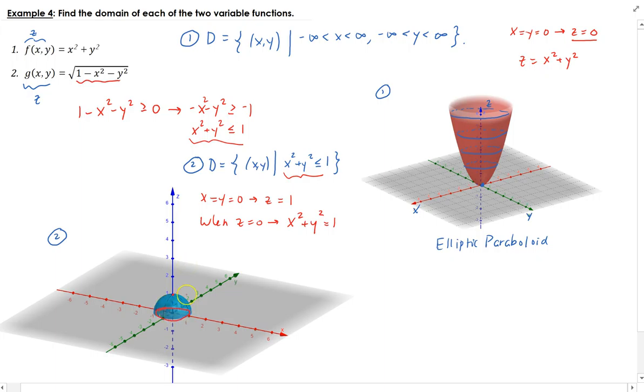So when z is equal to zero, this is going to give you the equation of a circle centered at the origin with radius of one. So that's what you see at the bottom here. So you get these various circles between z equals zero and z equals one, and the radius of those circles vary between one and zero.